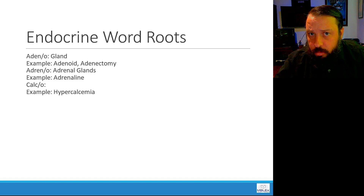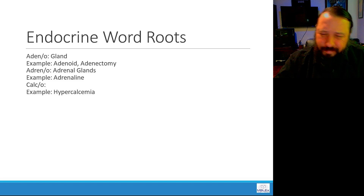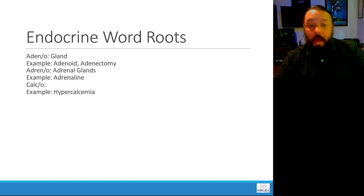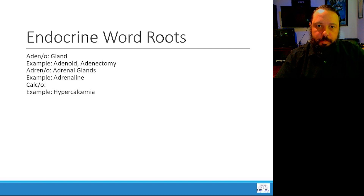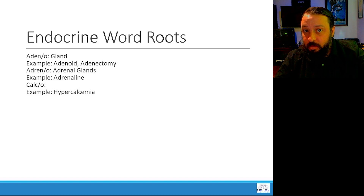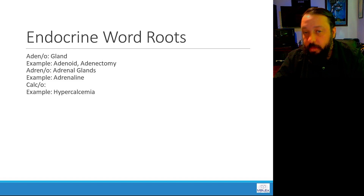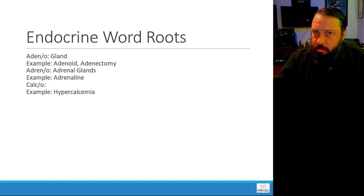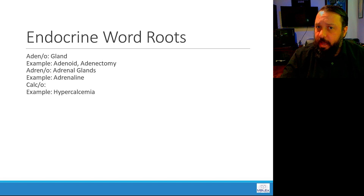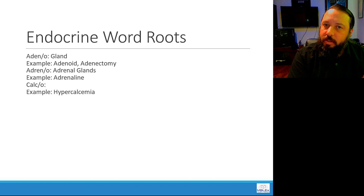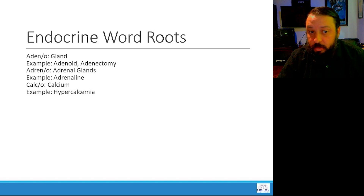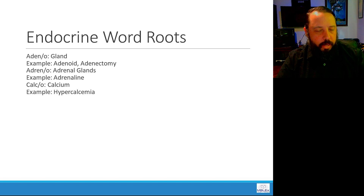What about calco or calso? You can see either one. Hypercalcemia is an example: hyper means too much, and emia means blood — so it means too much of something in the blood. Hypercalcemia means too much calcium in the blood. So calso or calco means calcium. When you see that term, you know calcium is involved in some way.